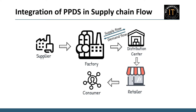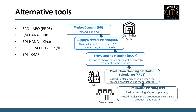Additionally, PPDS also enables vendor planning. Now let's explore the array of tools accessible in the market for optimizing the supply chain process. The options include: ECC integrated with APO PPDS; S/4 HANA integrated with IBP; S/4 HANA integrated with Kinaxis; ECC integrated with S/4 PPDS and other third-party tools; and S/4 integrated with OMP.